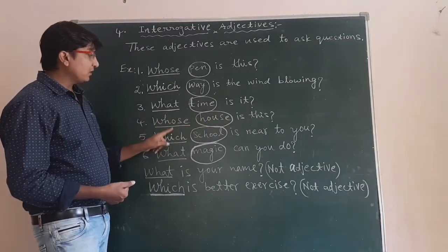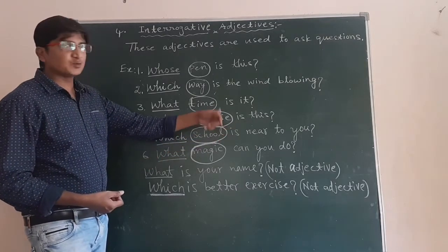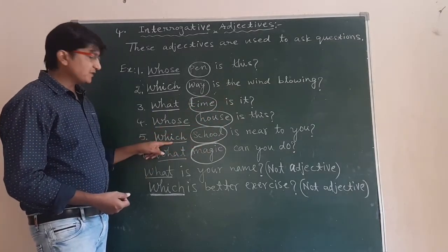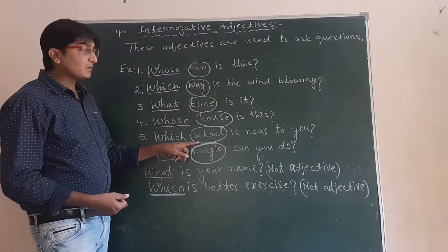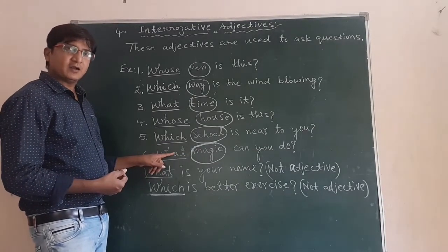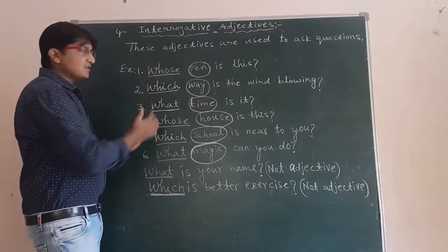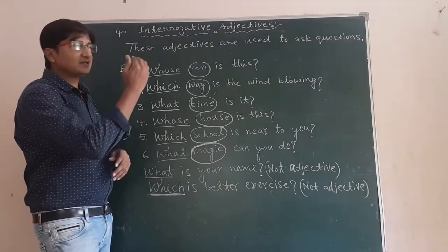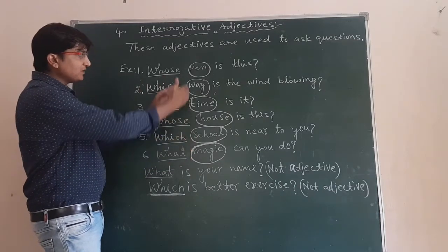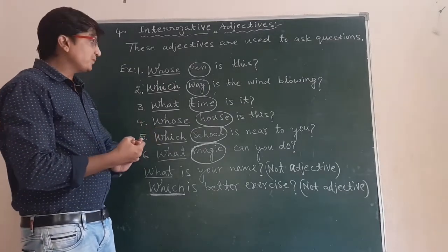'Whose house is this?' — 'house' is the noun, 'whose' is the adjective. 'Which school is near to your house?' — 'school' is the noun, 'which' is the adjective. 'What magic can you do?' — 'magic' is the noun, 'what' is the adjective. So in all these examples, 'whose', 'which', and 'what' are used for asking questions, and as they appear before the noun and modify it, these are called interrogative adjectives.